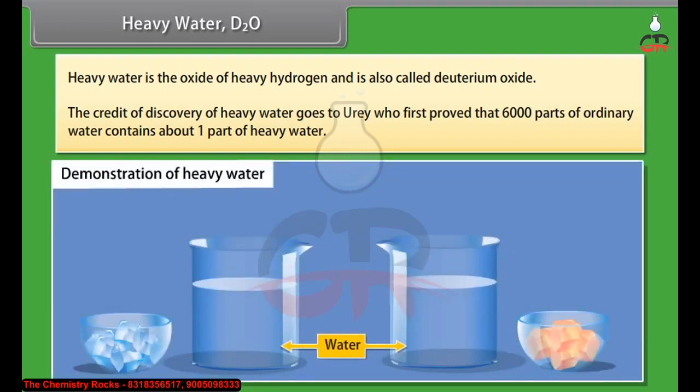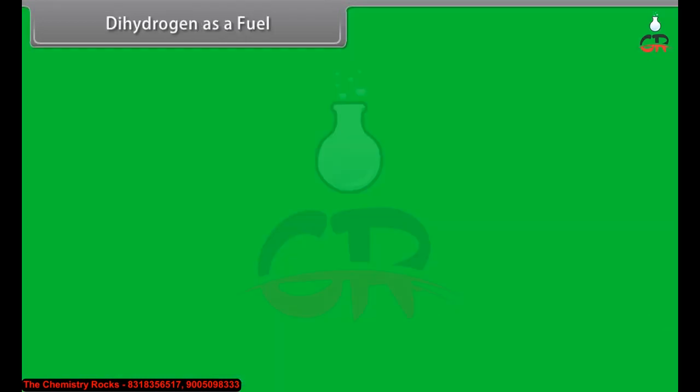Demonstration of heavy water: First, take two beakers filled with water. Drop an ice cube which is blue in color in the first beaker and see that ice floats on water. In another beaker, drop another ice cube which is red in color of heavy water D2O. You will see that the ice cube sinks in the water. This is due to the fact that deuterium is a heavier isotope than hydrogen and it changes physical and chemical properties of water.